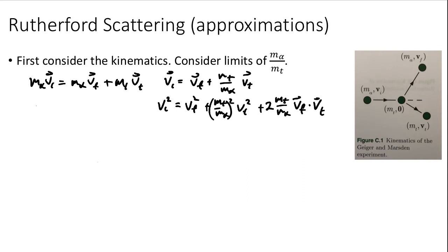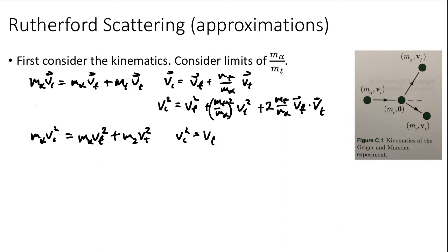Then we do conservation of energy, dropping factors of one-half throughout since they appear everywhere. We find that m_alpha v_i² equals m_alpha v_f² plus m_t v_t². Dividing through by m_alpha, v_i² equals v_f² plus (m_t / m_alpha) v_t².